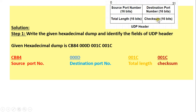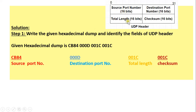The checksum field is optional in UDP. The given hexadecimal dump is arranged in 4 chunks, each having 4 hexadecimal digits, and each hexadecimal digit covers 4 bits. Therefore, each hexadecimal chunk will cover 16 bits, so that we can identify the fields of the UDP header.